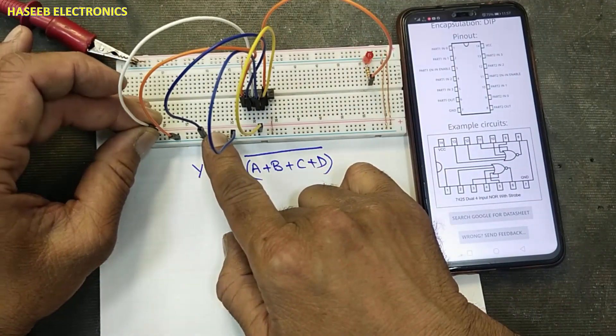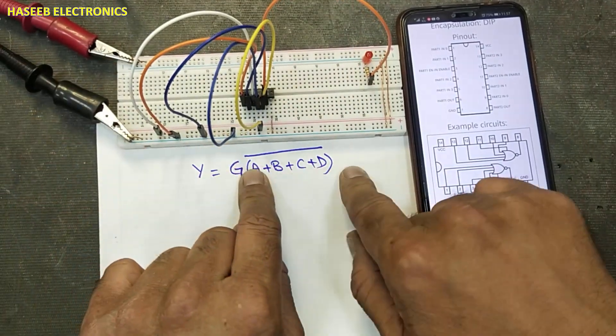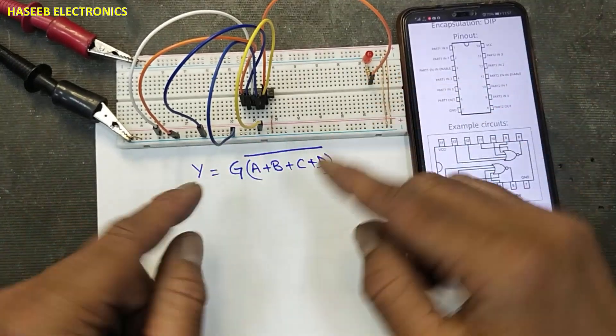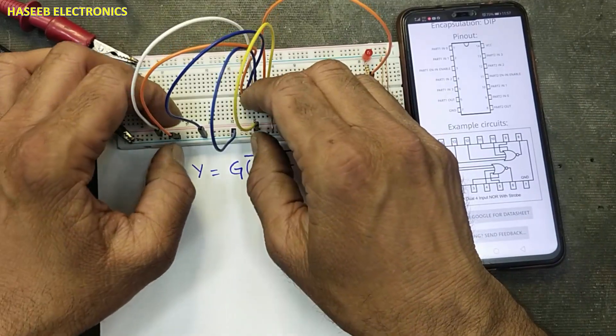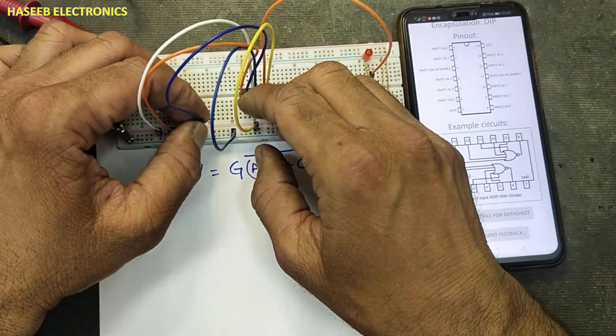Strobe high. This time, this NOR gate will be enabled. It will start functioning. Now, all inputs low, output high. Any input will go high. Now, it is NOR function.